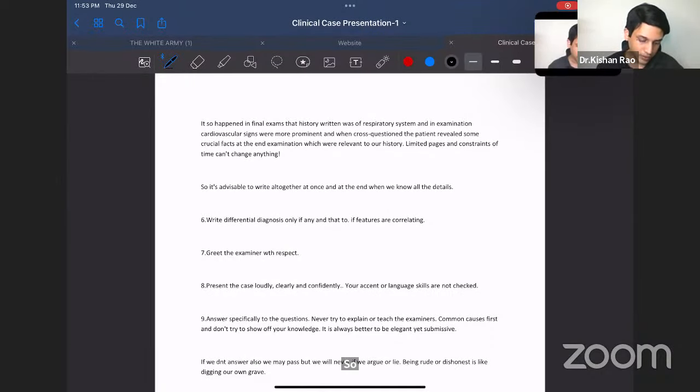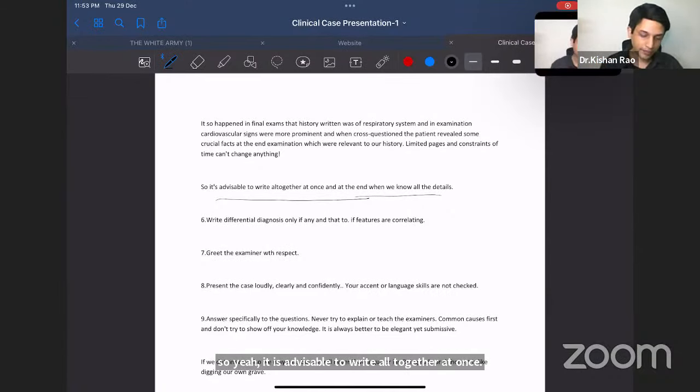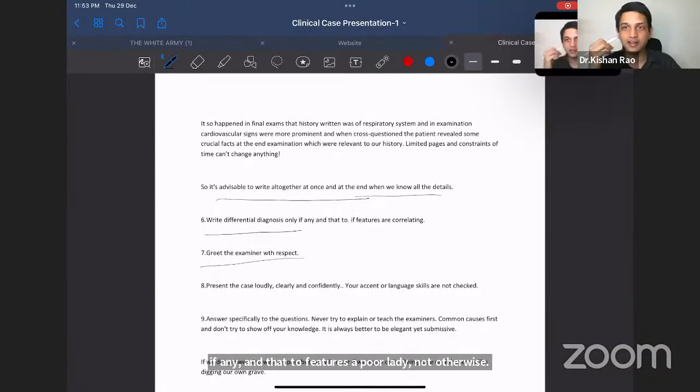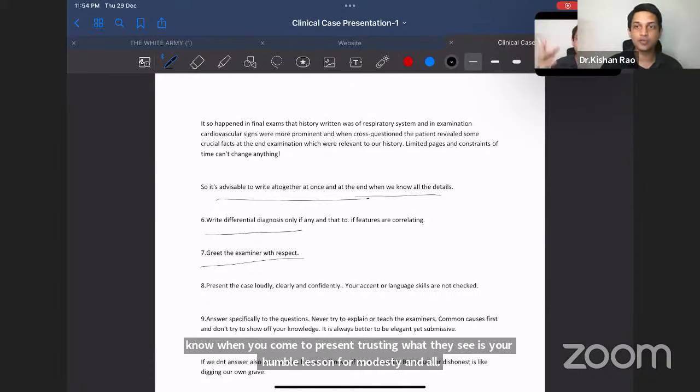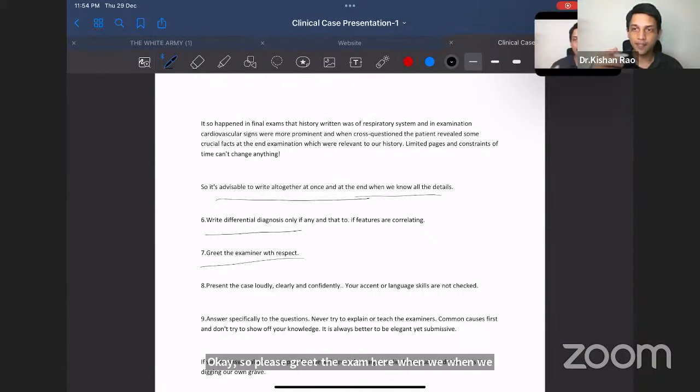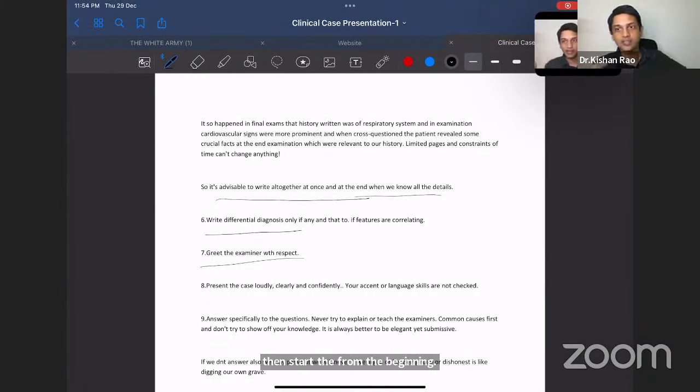So it is advisable to write all together at once at the end, when we all know the all the details of the case, right? Differential diagnosis only if any, and that two features are correlating, not otherwise. And now when you come to present first thing, what they see is your humbleness, your modesty and all. So please greet the examiner. When they, when he examiner ask you to sit, then sit, and please ask the permission to present whatever is, if you tell present, then start from the beginning. If he's what is your case, then you would tell only the diagnosis or tell the summary. So whatever examiner is asking, just try to answer that specifically. Just listen to him, be attentive and present the case loudly, clearly and confidently. Some keep mumbling. That's not good.